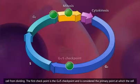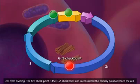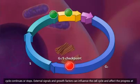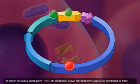The first checkpoint is the G1S checkpoint and is considered the primary point at which the cell cycle continues or stops. External signals and growth factors can influence the cell cycle and affect the progress at or before this critical checkpoint.